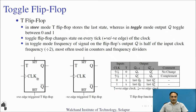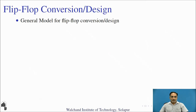On the left-hand side, two symbols of T flip-flops are shown. The first symbol is a positive edge-triggered T flip-flop, whereas the second symbol is a negative edge-triggered T flip-flop. Now let us revisit the general model which we are going to use for flip-flop conversion.